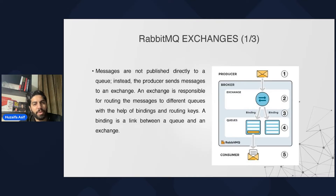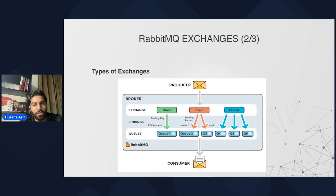What are RabbitMQ exchanges? Messages are not published directly to a queue. Instead, the producer sends the message to an exchange. An exchange is responsible for routing messages to different queues with the help of bindings and routing keys. A binding is a link between a queue and an exchange. There are different types of exchange: first, direct exchange that sends the message directly to the queue; second, topic, where you create a topic and multiple queues can be linked to it, so all queues under that topic receive the message; third, fanout, where all queues receive the information sent by the producer.